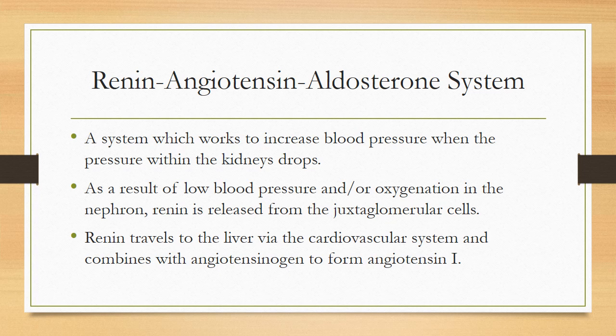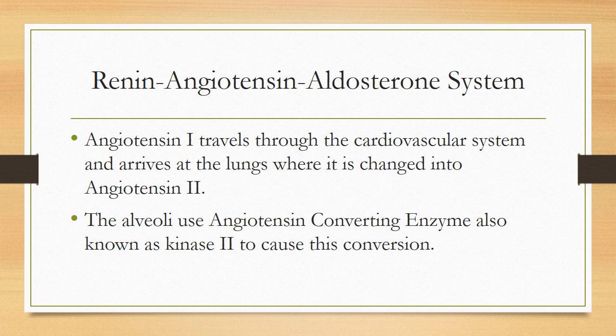Angiotensin 1 travels through the cardiovascular system and arrives at the lungs. At the lungs, angiotensin 1 is converted into angiotensin 2 with the help of the enzyme known as angiotensin converting enzyme. The alveoli use angiotensin converting enzyme to convert angiotensin 1 into angiotensin 2, and that angiotensin converting enzyme is also known as kinase 2.